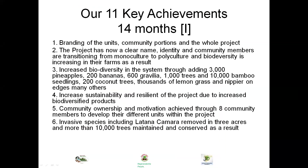Those are some of our key establishments. We are branding our units and have increased biodiversity: 3,000 pineapples, 200 bananas, gravelias, 10,000 bamboos, coconut trees, thousands of lemongrass and napier grass. Sustainability and resiliency keep increasing day after day. We also have a community ownership process — communities have accepted to start practicing on their own land and we have given them small pieces to start practicing. We keep removing invasive species like lantana camara, and we have maintained hundreds of thousands of trees.